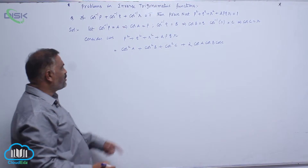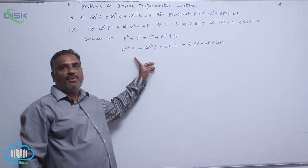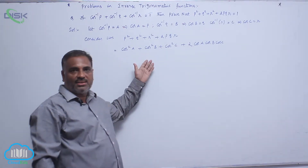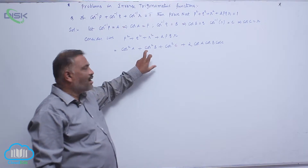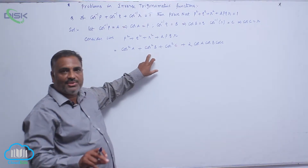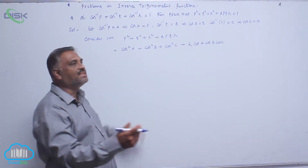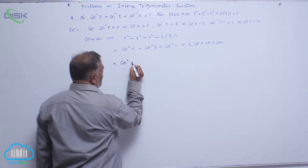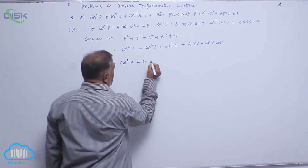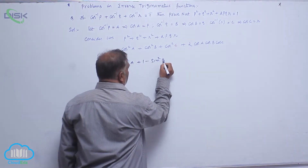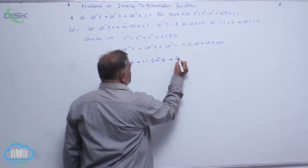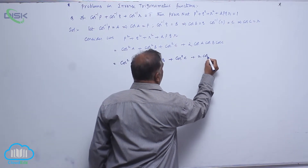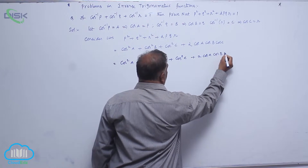There is no direct formula for cos squared A plus cos squared B, so convert cos squared B in terms of sin as 1 minus sin squared B. This gives cos squared A plus 1 minus sin squared B plus cos squared C plus 2 cos A cos B cos C.